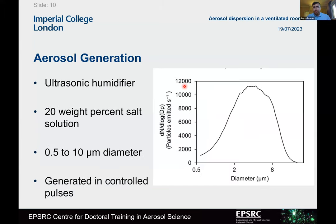For aerosol generation, we used an inexpensive ultrasonic humidifier supplied with a 20 weight percent salt solution of sodium chloride, placed at a height of 1.6 metres — roughly the height of coughing or sneezing while standing. We chose the ultrasonic humidifier because it produced a broad size distribution of dried salt crystals, between 0.5 microns and 10 microns, which nicely corresponds to respiratory or inhalable aerosols. The size distributions are shown on the right.